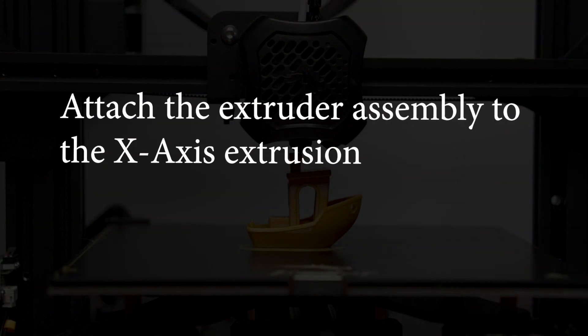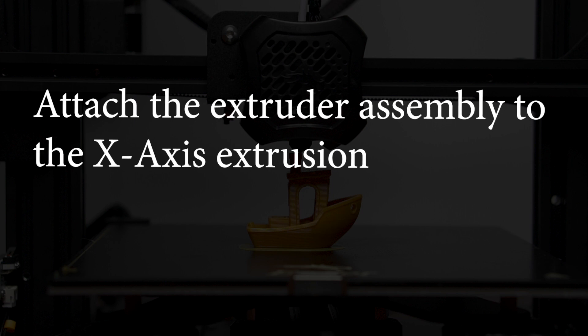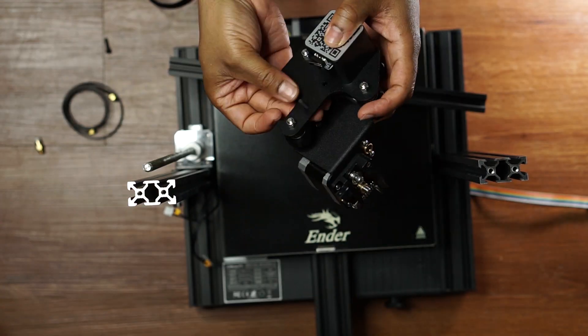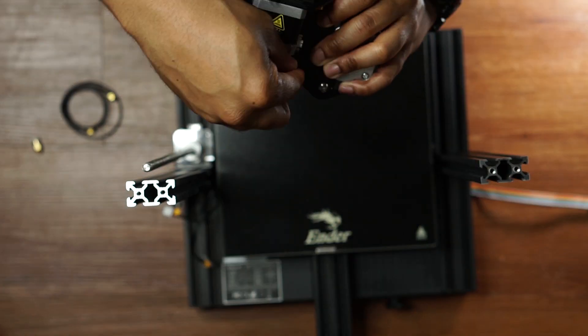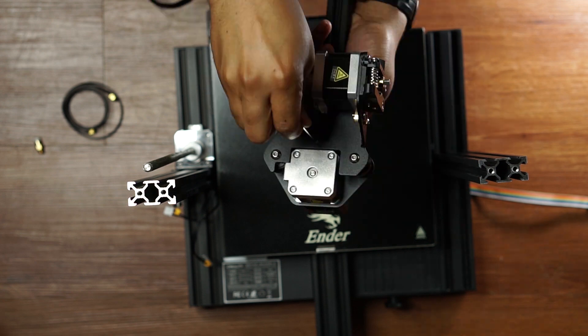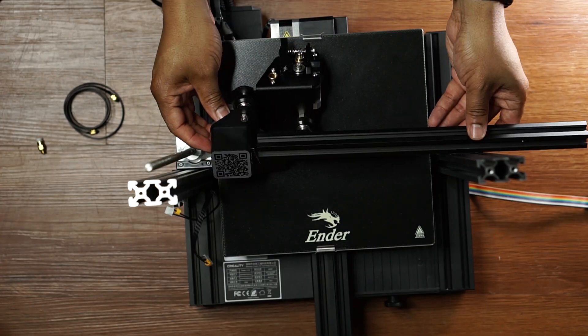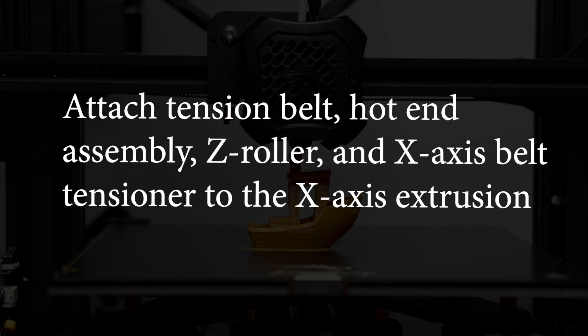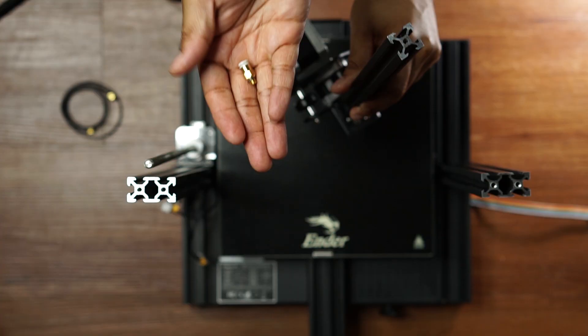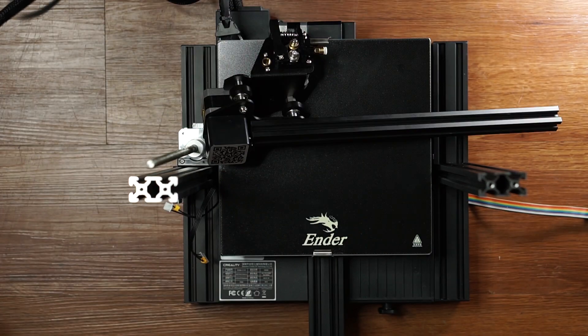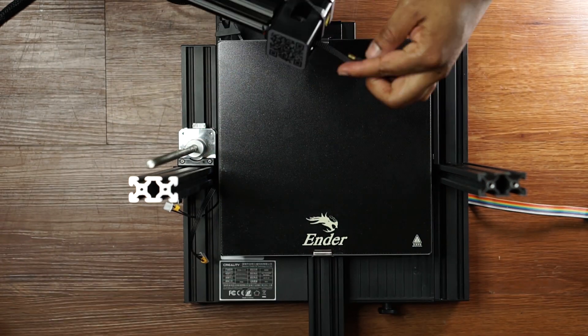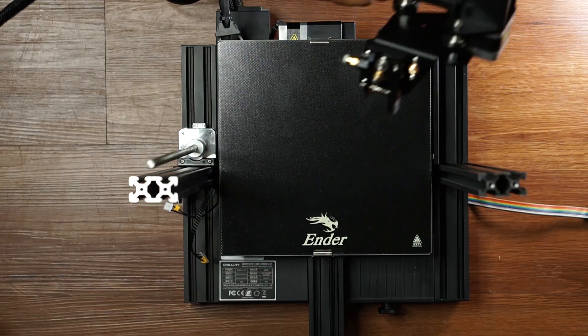Next attach the extruder assembly to the x-axis extrusion. Next attach the tension belt, hot end assembly, z-roller and x-axis belt tensioner to the x-axis extrusion. So this is where we're putting together all of the parts and adding on the hot end to the x-axis.